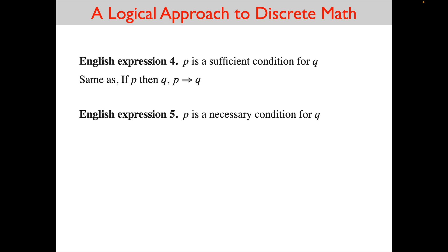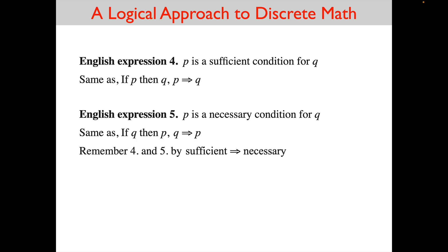The other word is 'necessary.' Suppose a professor says writing a 100-page term paper is necessary to pass the course — if you don't write it, you can't pass. 'P is necessary for Q' — is this if P then Q, or if Q then P? It is obviously if Q then P, because this is saying if you pass the class then you wrote that 100-page term paper. So P is necessary for Q means Q implies P.